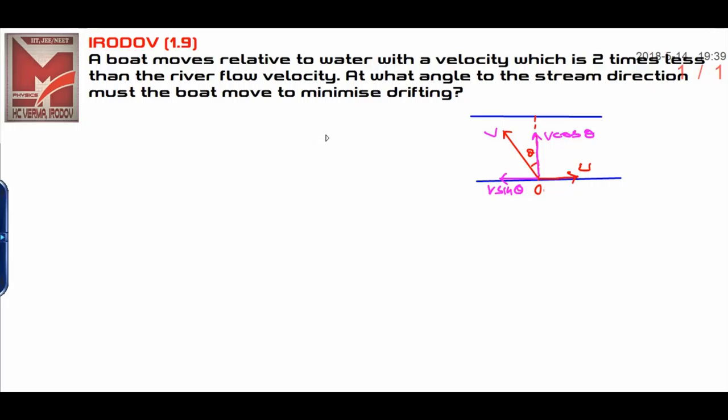Minimum drifting means this particular boat is moving along this direction straightway. It means this component of the velocity should be equivalent to this component of the velocity.